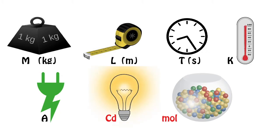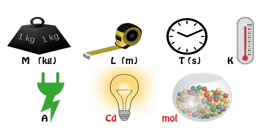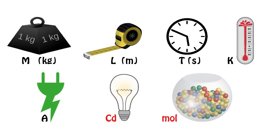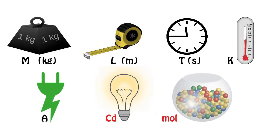Note that candela and mole are highlighted in red because these two units will be rarely used in our dimensional analysis. We will be dealing with mass, length, and time most of the time — that is MLT. In some formulas we will use Kelvin (K) and current (ampere). These — M, L, T, K, A, Cd, and mole — are dimensional notations, not units. Units are kilogram, meter, second, etc.